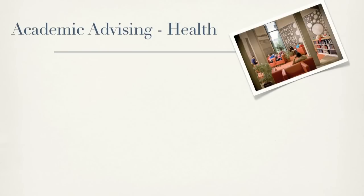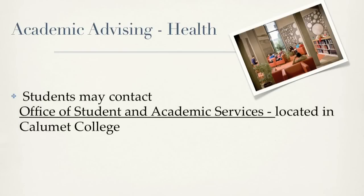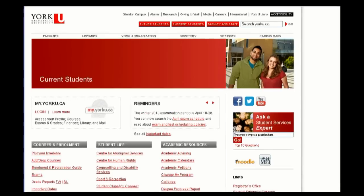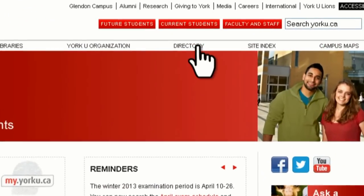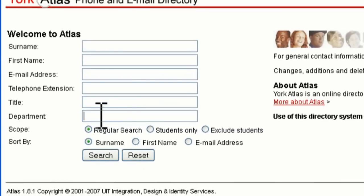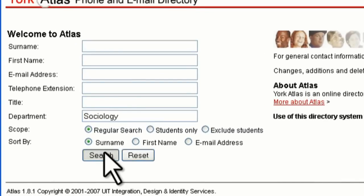Faculty-based academic advising is available for undergraduate students seeking advice about the requirements of their degree programs and their academic progress. In the Faculty of Health, advising is offered through the Office of Student and Academic Services. In addition to faculty advising, each school or department has their own academic advising resources. For help with specific questions regarding your major requirements, or if you need help enrolling in major courses, you should visit the Program Office. Search York's Directory to find Program Office addresses.